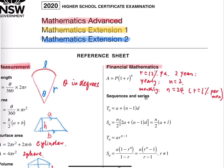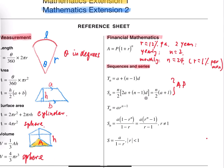Next is sequences and series, also for advanced students — highlighting in red. The first two formulas are for AP (arithmetic progression) and the other three are for GP (geometric progression). For both, A represents the first term and L is the last term. D is only for AP — it's the common difference, equal to term two minus term one. For GP, R is the common ratio, equal to term two over term one.